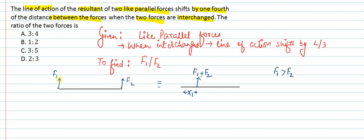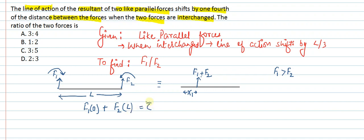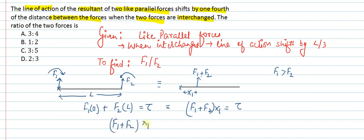Taking torque about F1: F1 will produce clockwise torque and F2 will produce anticlockwise torque. Given the distance between forces is L, the torque equation becomes F2 into L. For the equivalent single force, torque about the same point is (F1 + F2) into X1. From these two equations we get: (F1 + F2) × X1 = F2 × L. This is Equation 1.